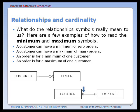Reading from the employee side of the relationship: any one employee can be assigned to a minimum of one location — they have to have a location for work. Any one employee can be assigned to a maximum of one location; they cannot have more than one office space assigned to them.